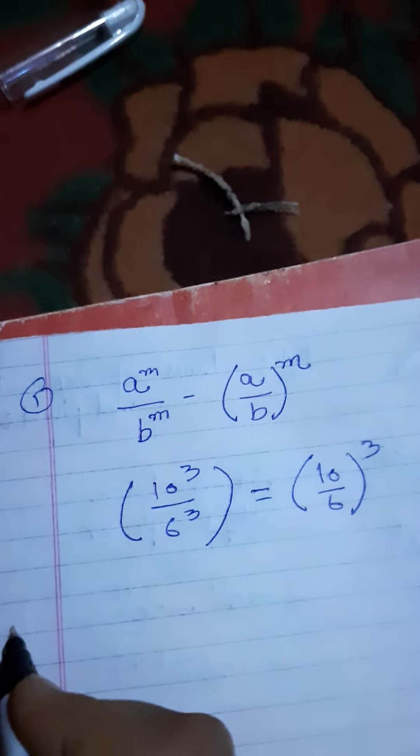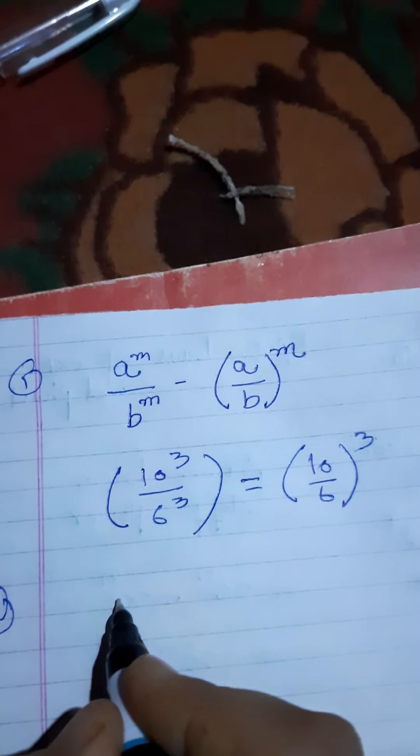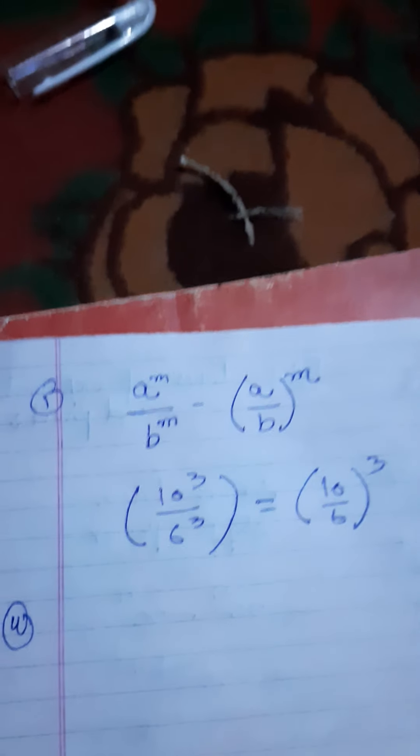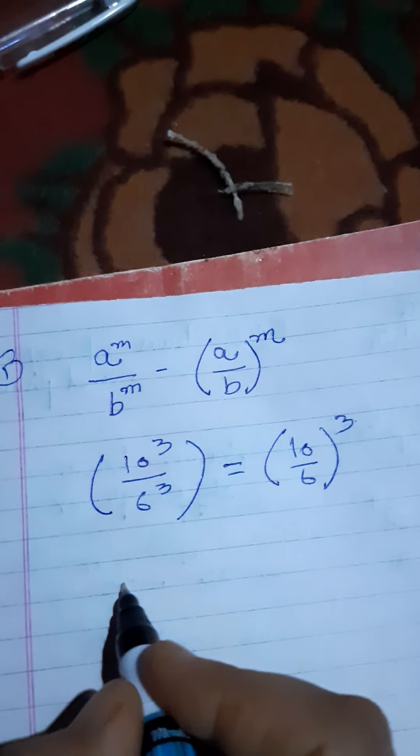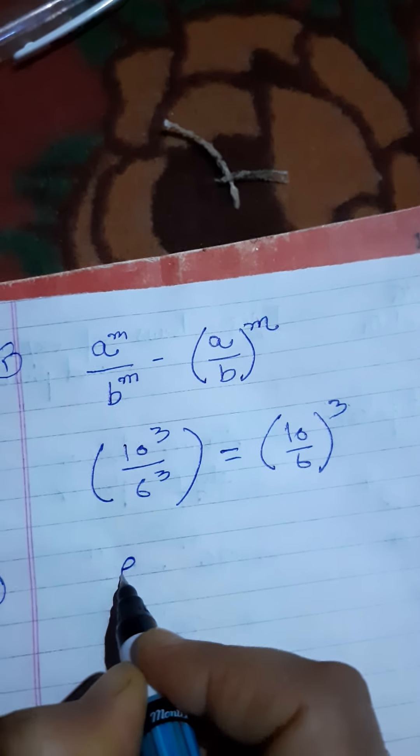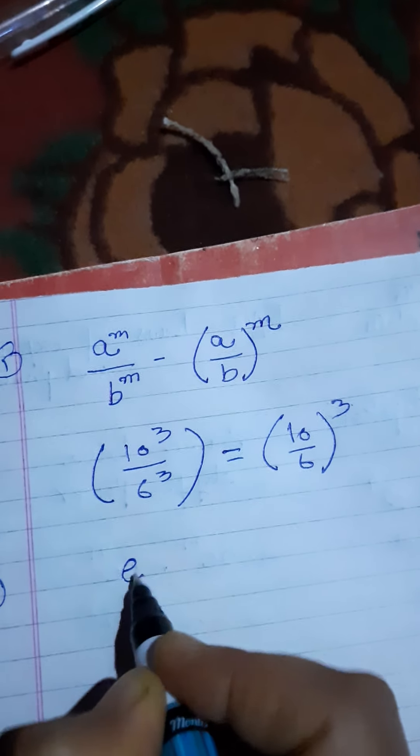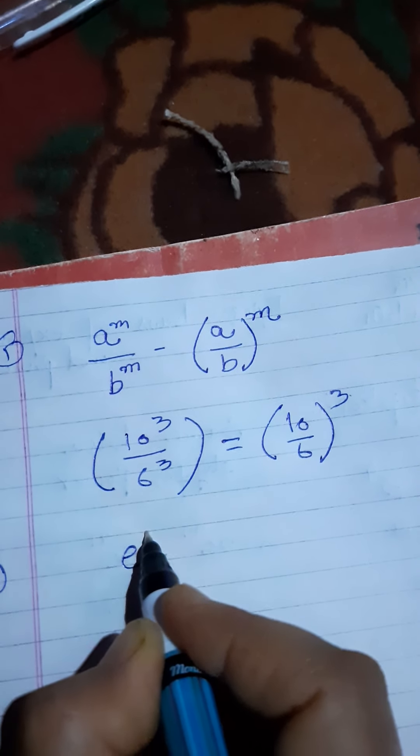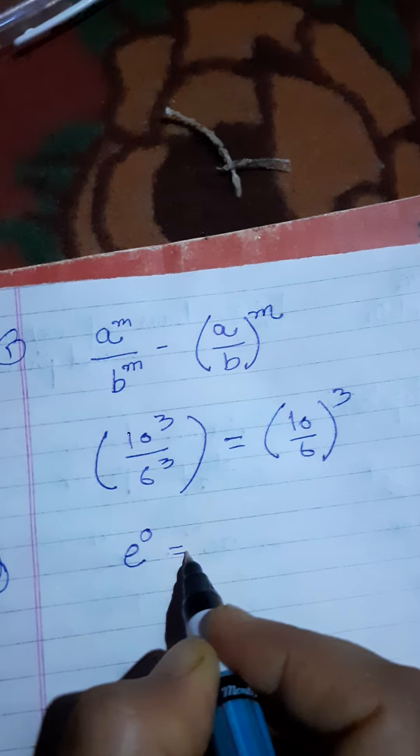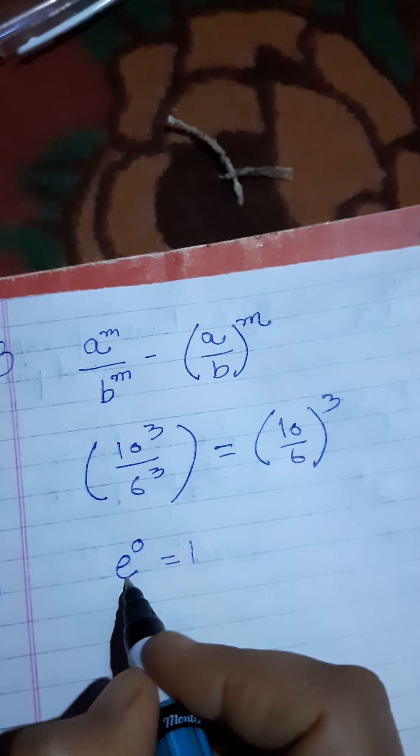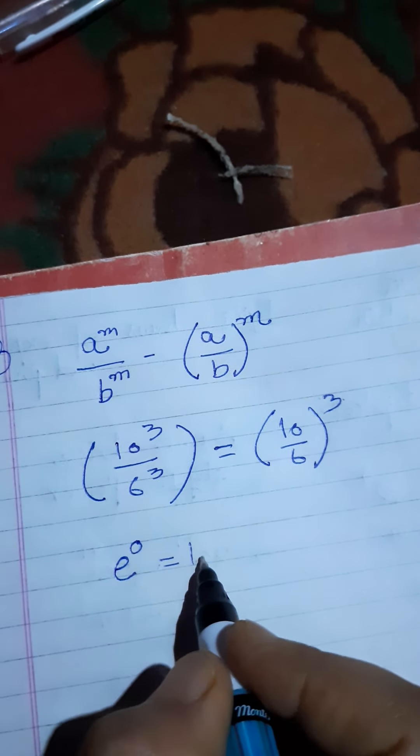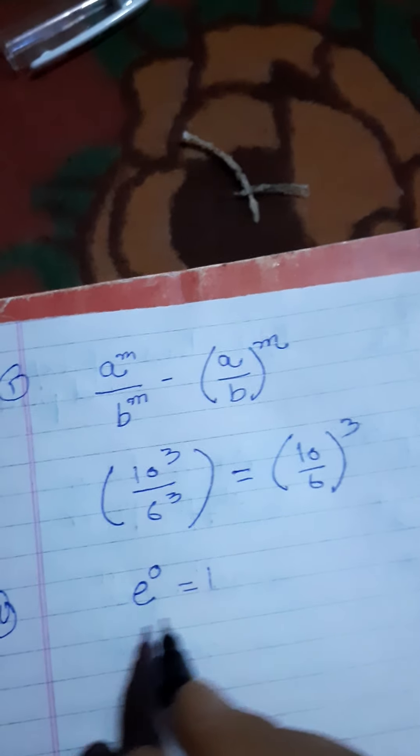Now the zero power. Everything raised to power zero is equal to one. Any number raised to power zero equals one.